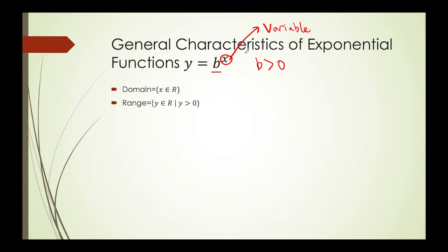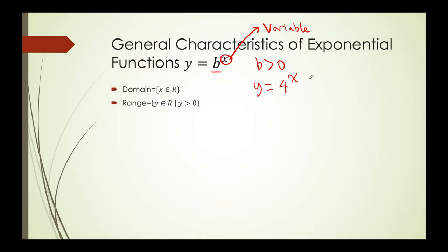The range is more limited — we notice that the range is greater than 0. If we look at an example, let's say we have y is equal to 4 to the x. I can substitute in positive exponents, negative exponents, fractional exponents — it doesn't matter what I have. But what I always notice is that my answer will have to be greater than 0.